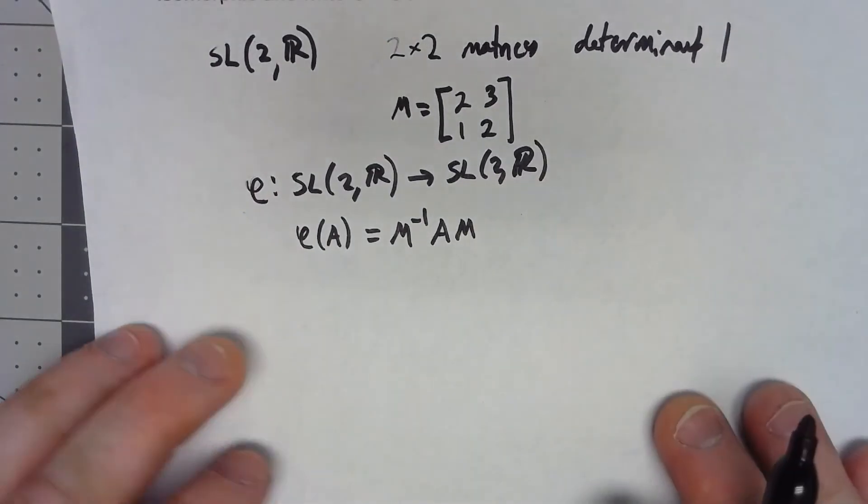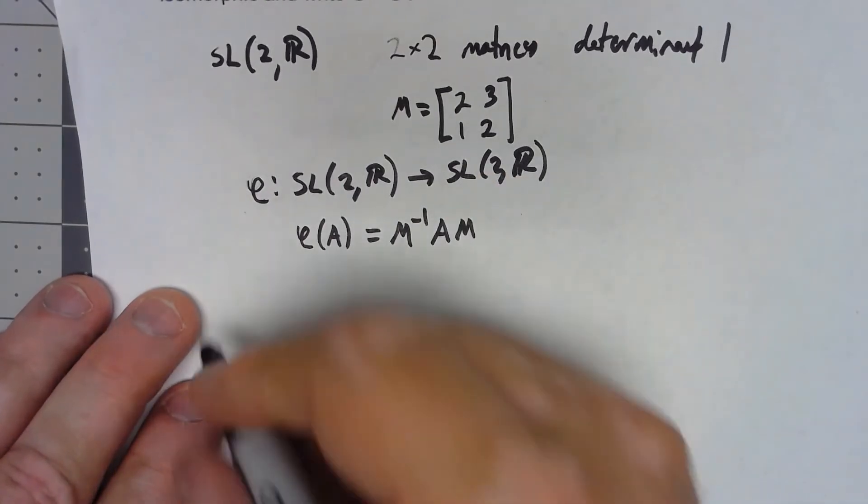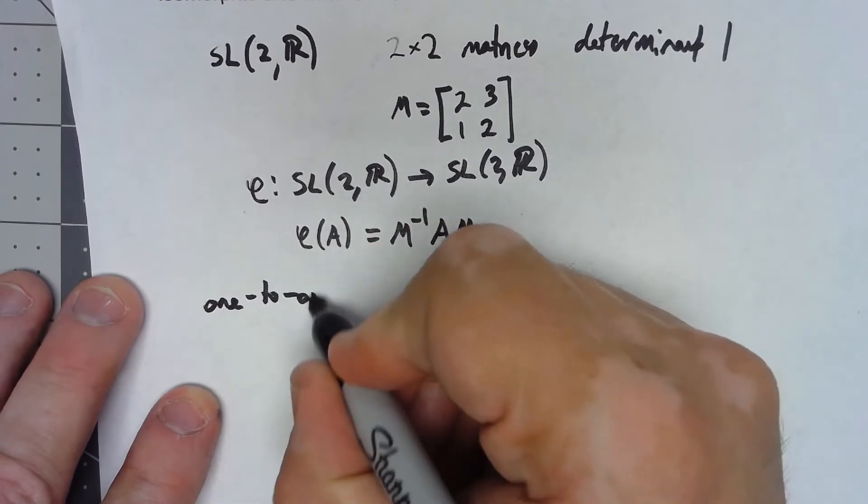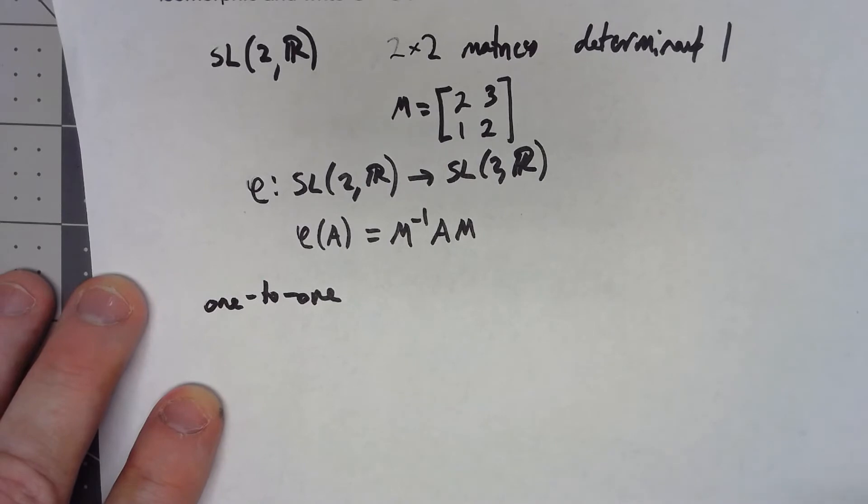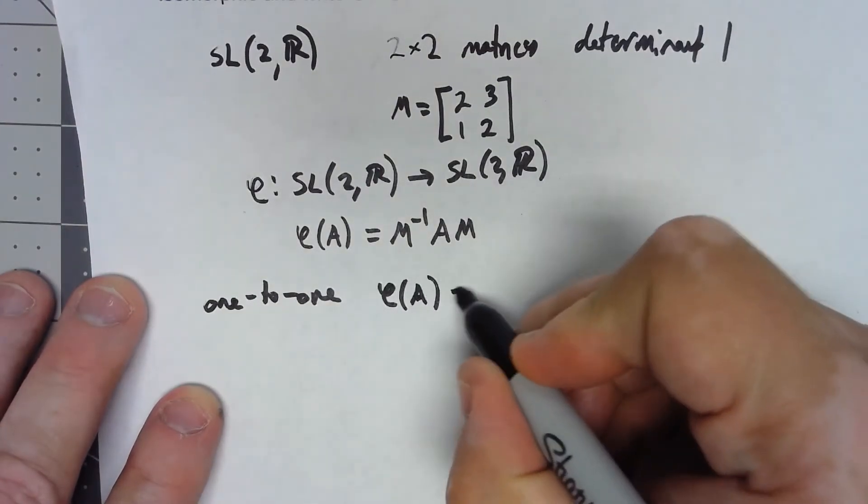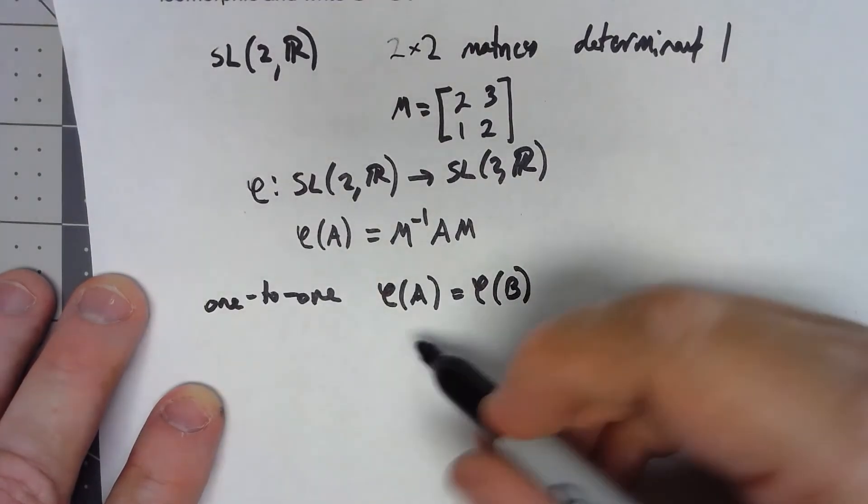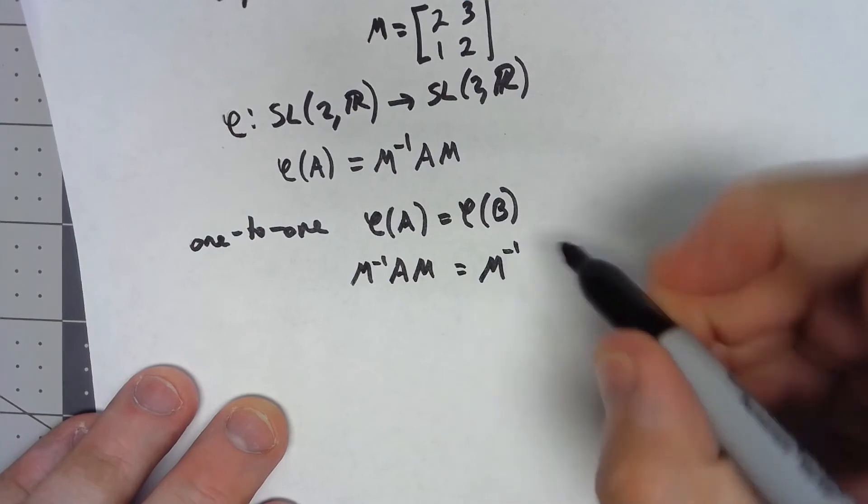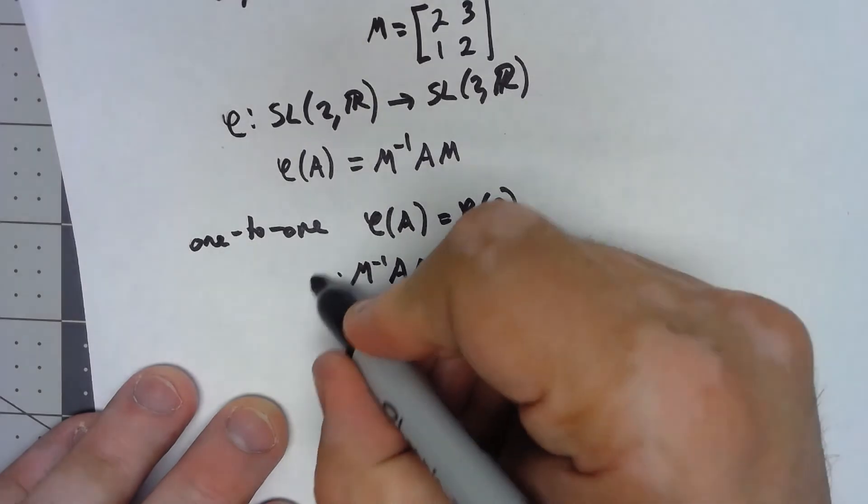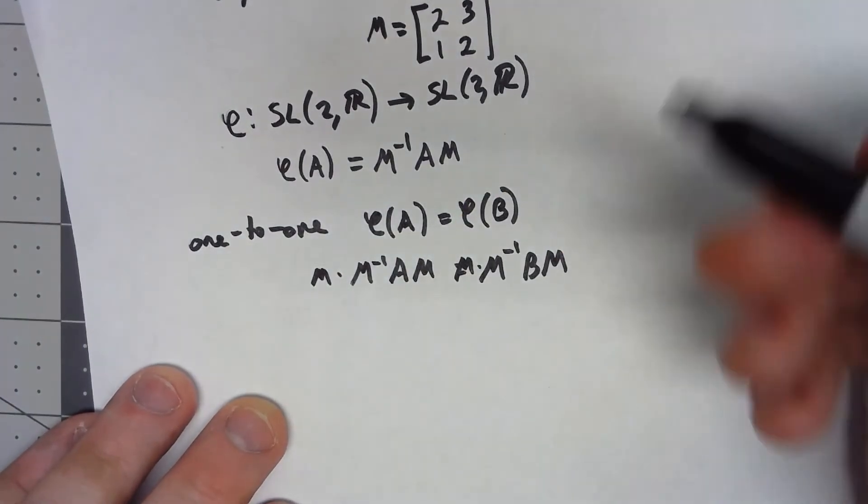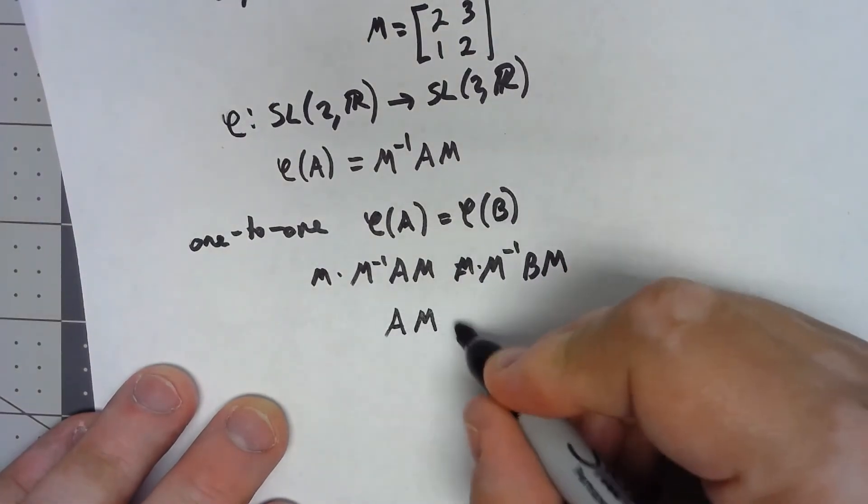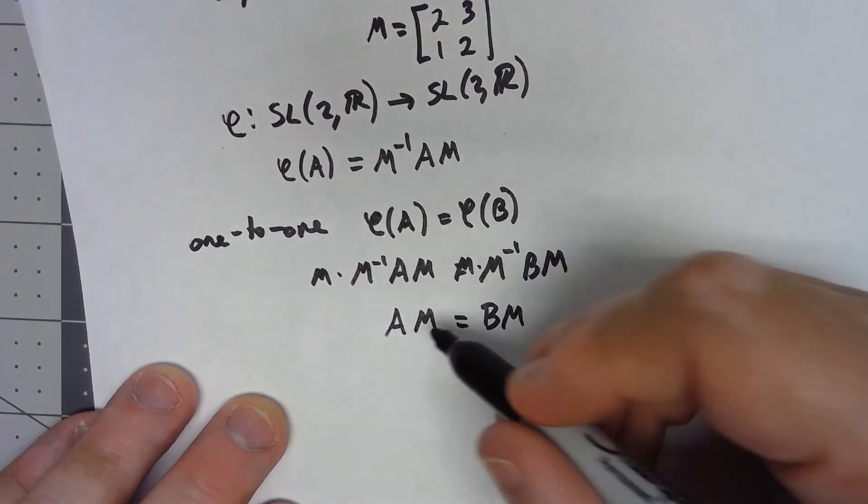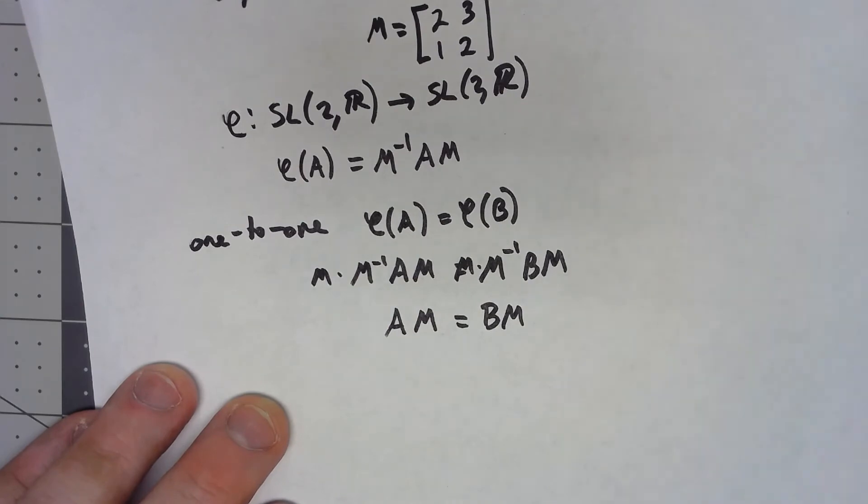For a function to be one-to-one, we assume that phi of one thing equals phi of another. So if phi of A equals phi of some matrix B, then we show that A has to equal B. Well, what does this mean? M inverse AM would have to equal M inverse BM. If I multiply on the left by M, M times M inverse is the identity matrix, so I'm going to end up with just AM equals BM. If I multiply on the right by M inverse, or effectively use the right cancellation property, I get that A equals B. So that is in fact a one-to-one function.